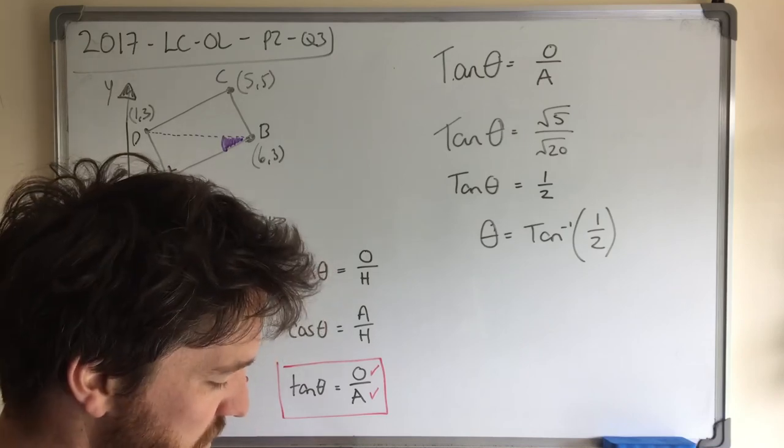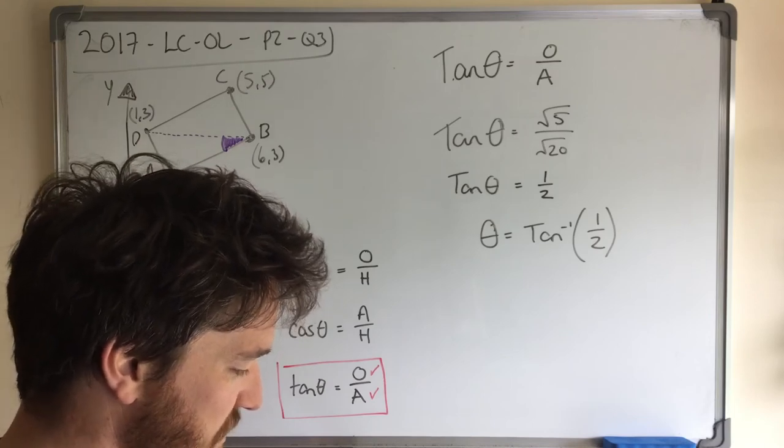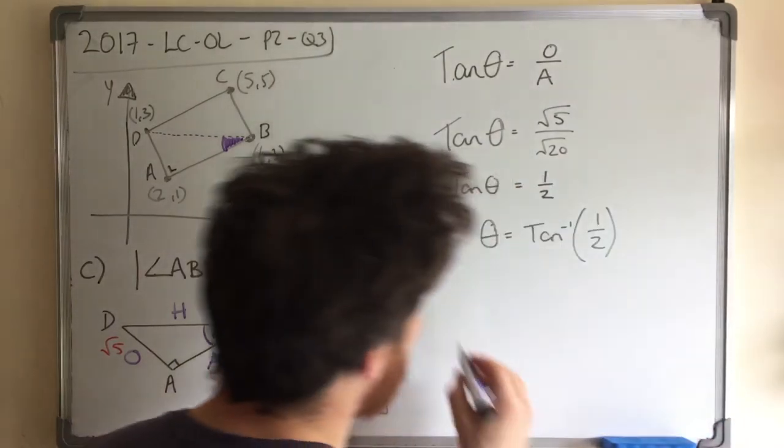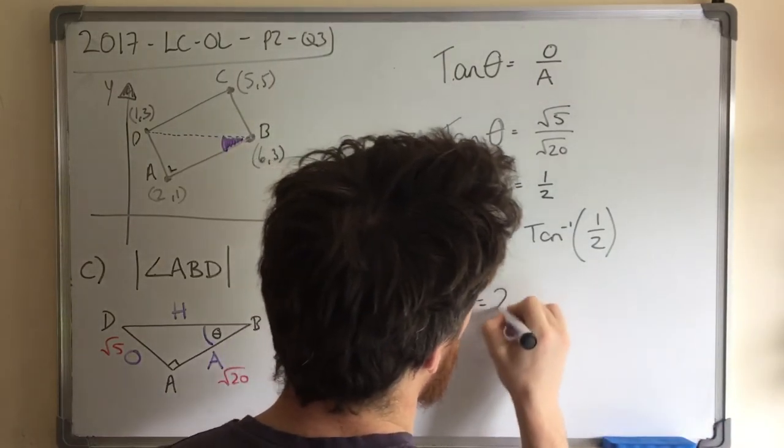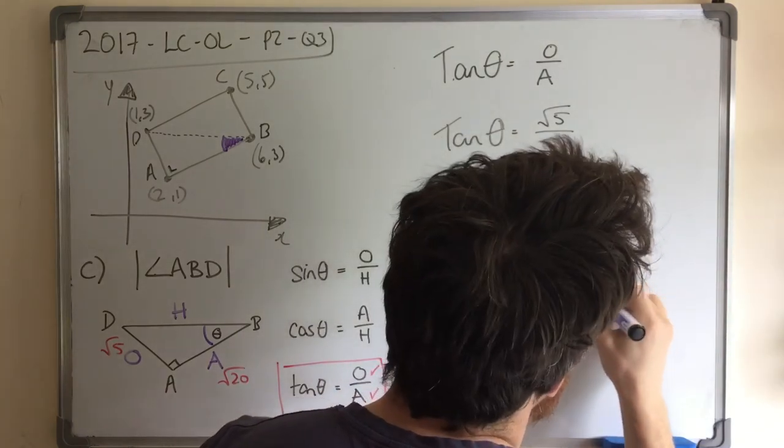You'll see a minus 1. You can put a bracket and write a half, or you can write 0.5, either will be fine. And I end up getting 26.565, yadda yadda yadda. 26.56505118. Your calculator might get slightly different results if it's a slightly different calculator.